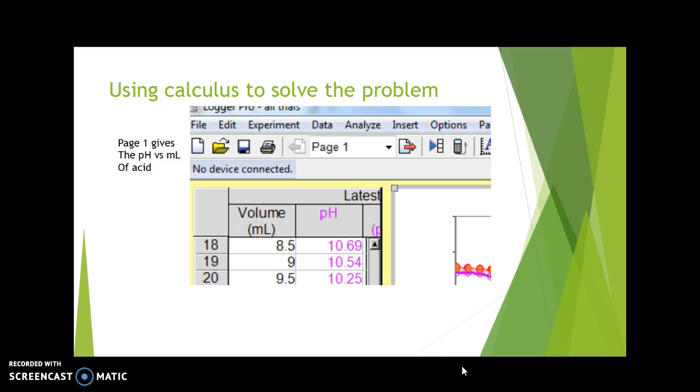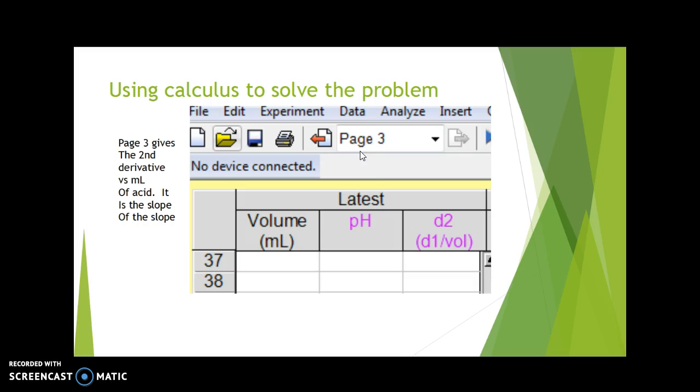On the Vernier graph, you're probably on page one, the one that looked like the previous slide. It gives the pH versus milliliters of acid added. What you're going to do is go up to the top of that page where I'm showing you here where it says page one, and click on this, and you will see page three come up.